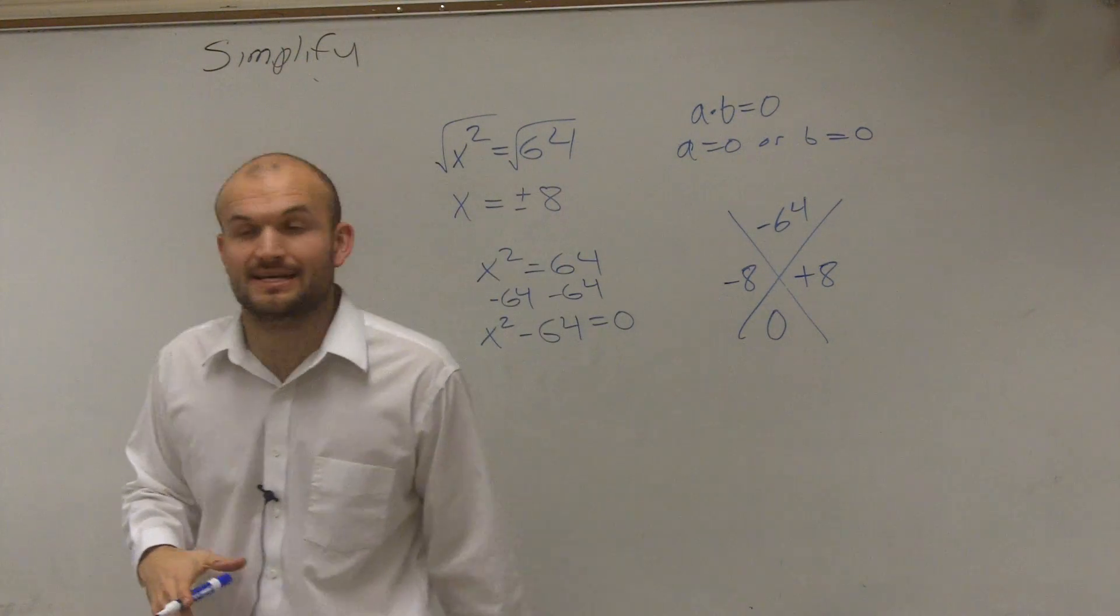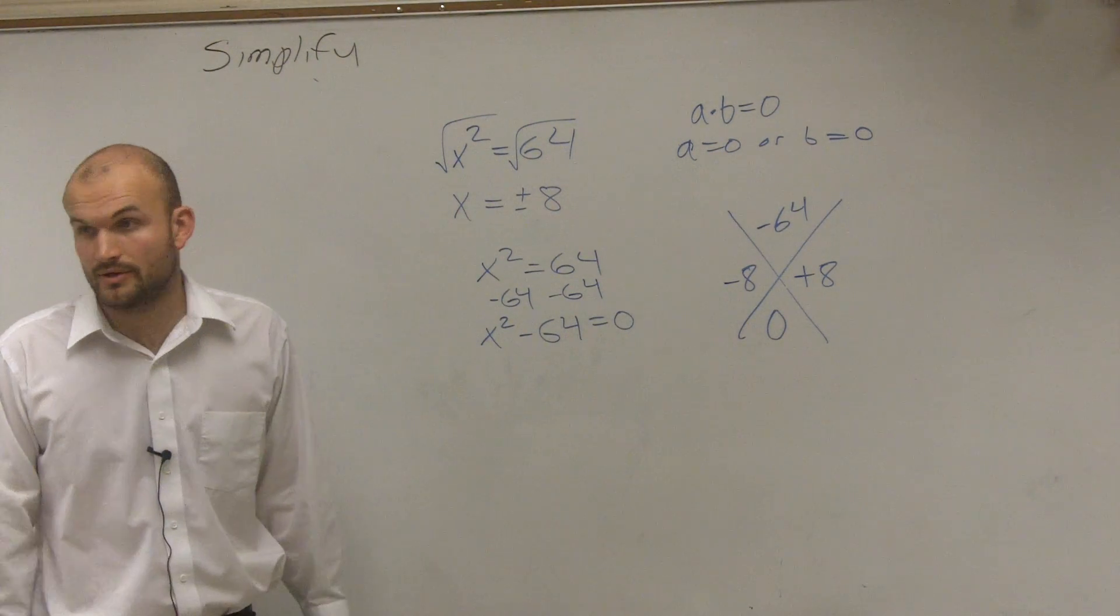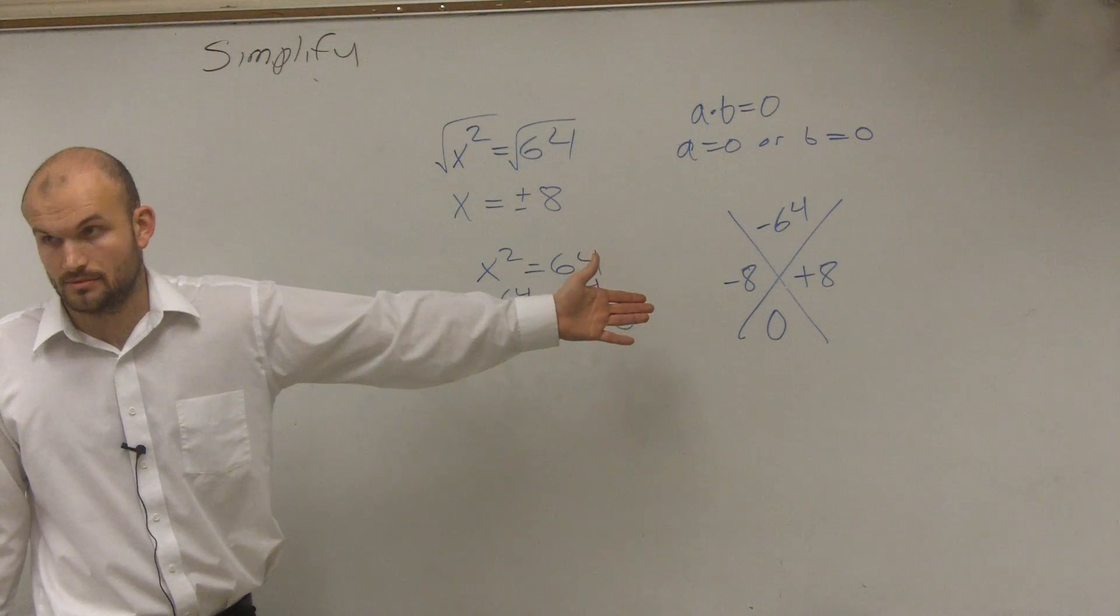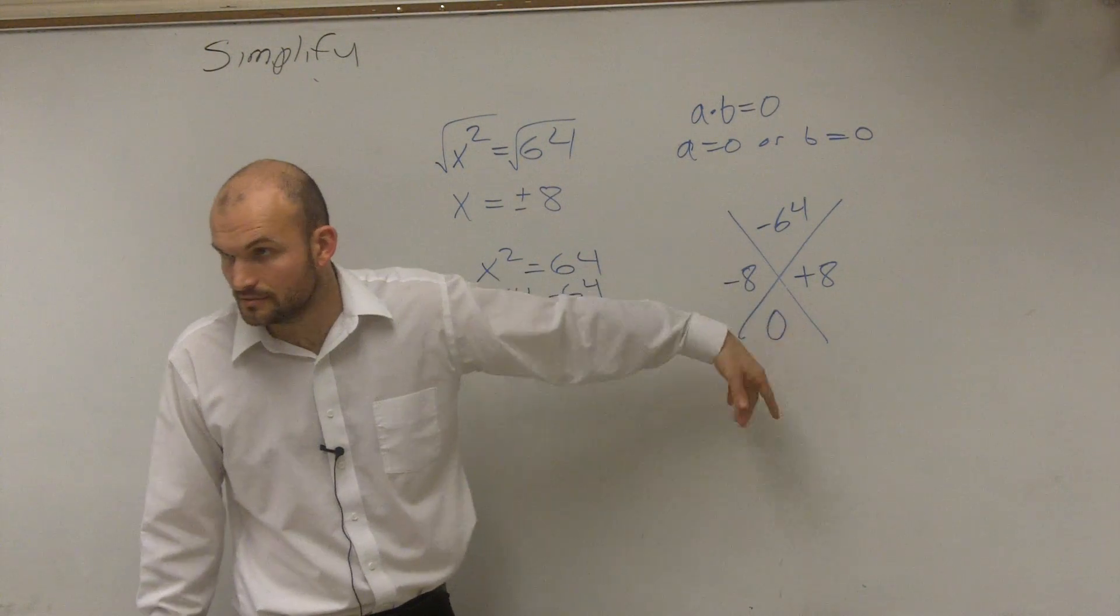It becomes -8 and +8. Does -8 times +8 give you -64? Yes. And do they add to give you zero? Yes.